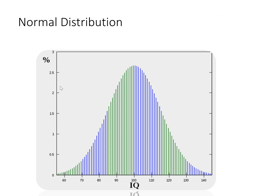Here we have a normal distribution of IQ scores with a mean of 100 and a standard deviation of 15. We can see that most IQ scores fall within about 15 points of 100, plus or minus 15, and the further out we go, the less probable or less frequent given IQ scores are. To have a super high IQ or really low IQ is relatively unlikely, whereas an IQ somewhere near average is most probable.